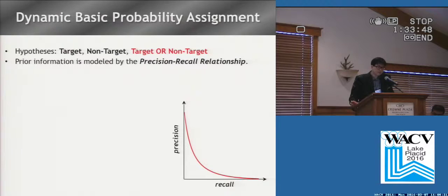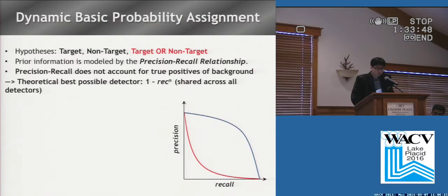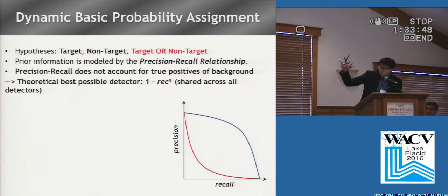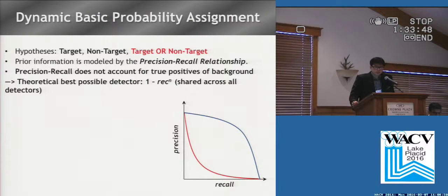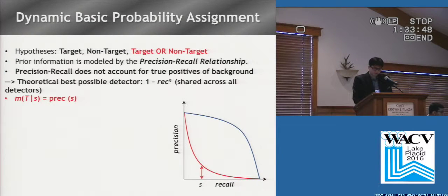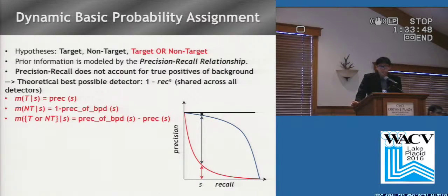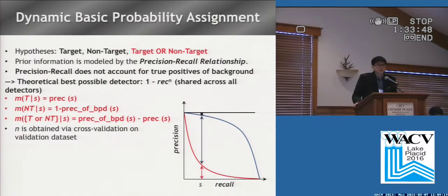We dynamically assign the basic probability to three hypotheses with respect to detection score S. As mentioned, prior information is modeled by the precision-recall relationship. Please note that precision-recall does not account for true negative background, which does not allow us to calculate precision of non-target. Therefore, we introduce the theoretical best possible detector indicated in the upper curve, whose performance is defined as 1-recall to the power N. This best possible detector is shared across all detectors. From the PR curve, given a score S, the corresponding precision is assigned to basic probability of target. 1-precision of the best possible detector is assigned to basic probability of non-target. The difference between the two precisions is assigned to basic probability of target or non-target. The parameter N is obtained via cross-validation on the validation set.